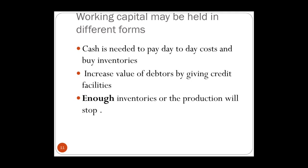Working capital may be held in different forms: cash to pay today's expenses, debtors — money owed by customers — and sufficient inventories to keep production running. Cash, debtors, and inventories are current assets. Current assets should cover current liabilities. If current assets exceed current liabilities, the business has positive working capital and is liquid. If not, there is a serious problem, since working capital is the lifeblood of the business and must be present to pay for materials, wages, and other essentials.